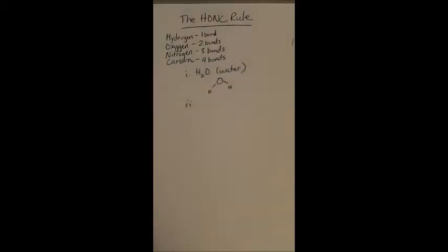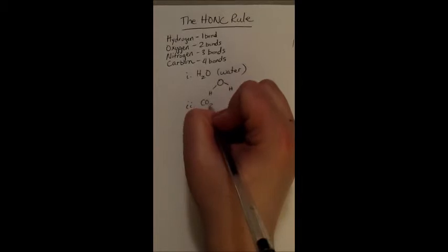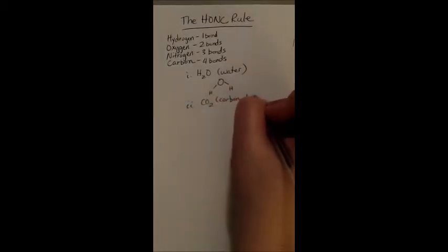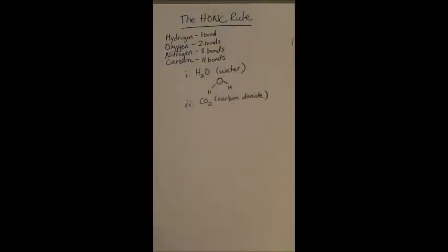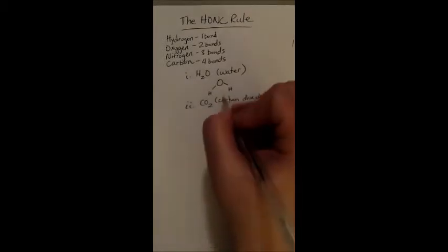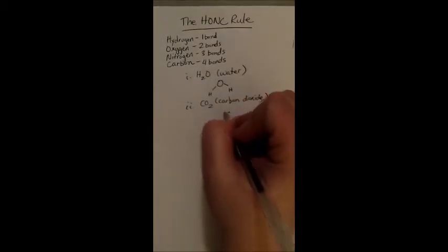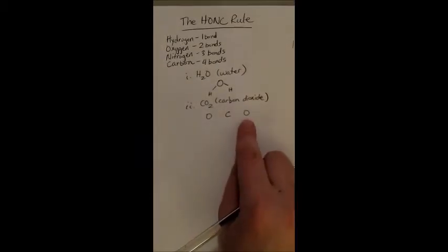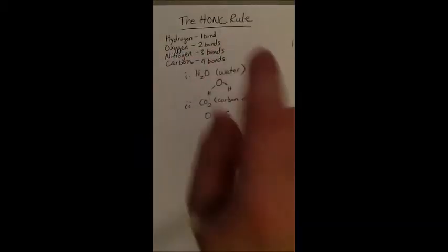We also have CO2, which is carbon dioxide. So we have one carbon and two oxygens. Let's take the carbon and put it in the middle, and the oxygens on the sides. The oxygen wants two bonds.